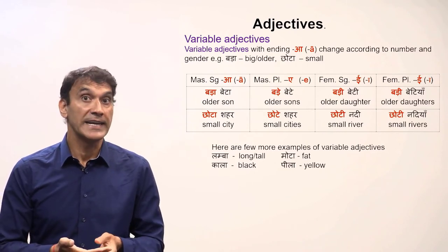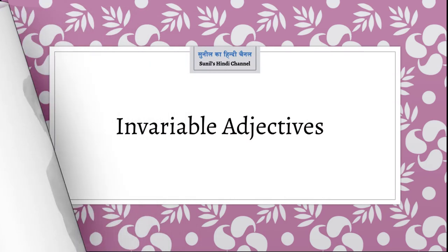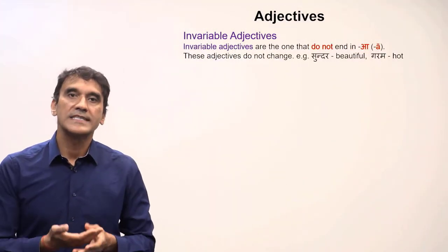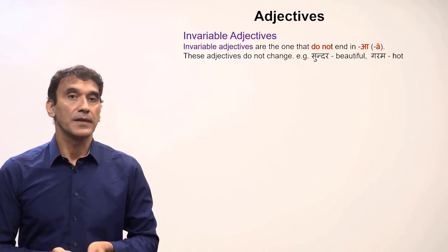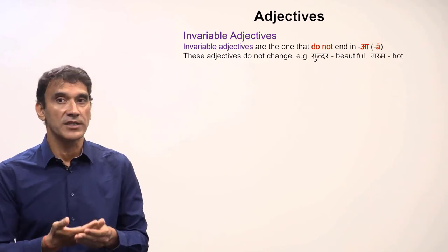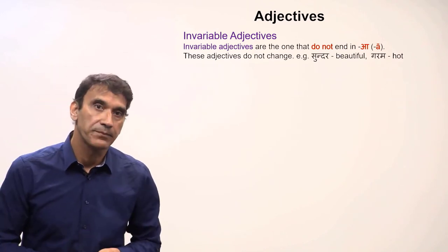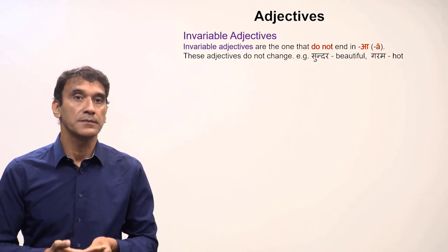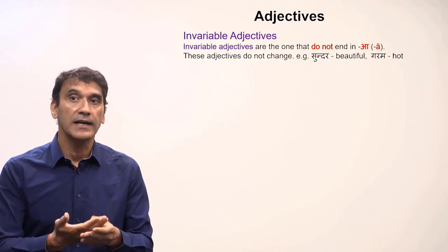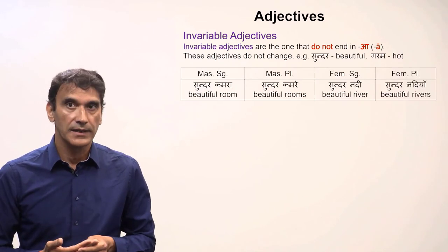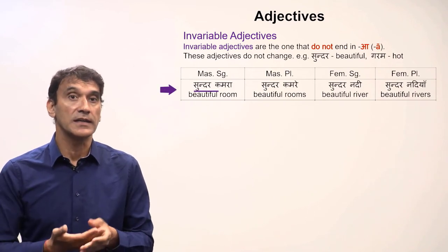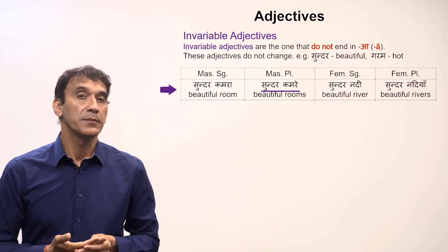Let's now take the invariable adjectives. As mentioned earlier, invariable adjectives do not change according to number and gender — they always stay the same. For example, 'sundar' (beautiful) and 'garam' (hot). The invariable adjectives do not have the ending -a, that's why they stay the same in all forms.